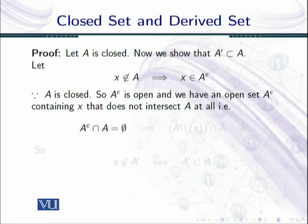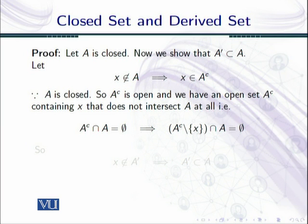If A complement intersection A is empty, then if I subtract x from this intersection, the answer is still empty. So A complement minus x, intersection A is empty. It means that I have an open set containing x that does not intersect with A other than x. So it means that x does not belong to the derived set of A, because x is not a limit point of A.